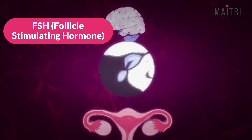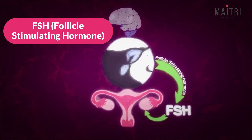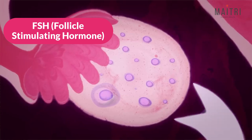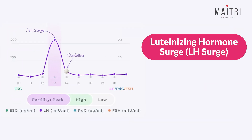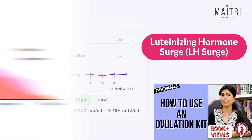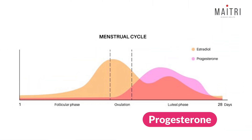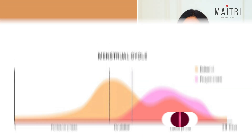FSH, follicle stimulating hormone: this hormone helps the follicles to grow. High levels can indicate a lower egg reserve. Luteinizing hormone surge, LH surge: the sudden rise in LH hormone mid-cycle. This rise triggers ovulation and is detected in ovulation predictor kits. Progesterone: this hormone supports the uterine lining after ovulation, which is essential for implantation.